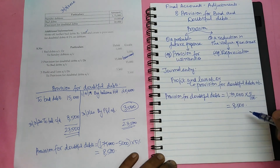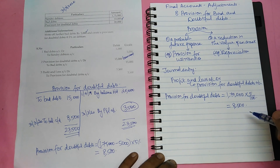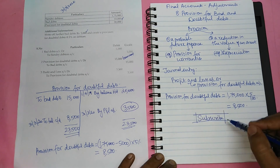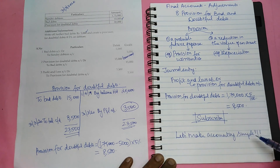I hope that you understood the concept of provision for bad and doubtful debts. If you are facing difficulty in passing journal entries with respect to any transaction, please do leave it as a comment below. Thanks for watching this video. Please do subscribe to my channel and press the bell icon for instant notifications. Let's make accounting simple.